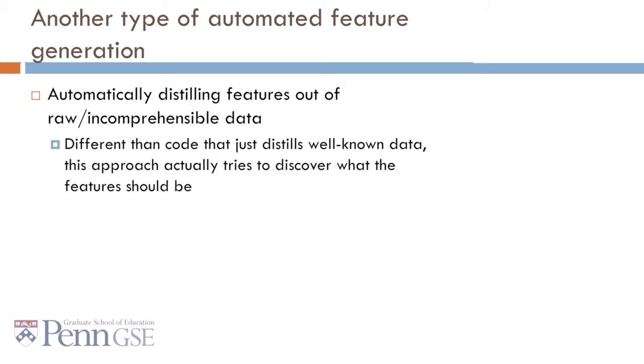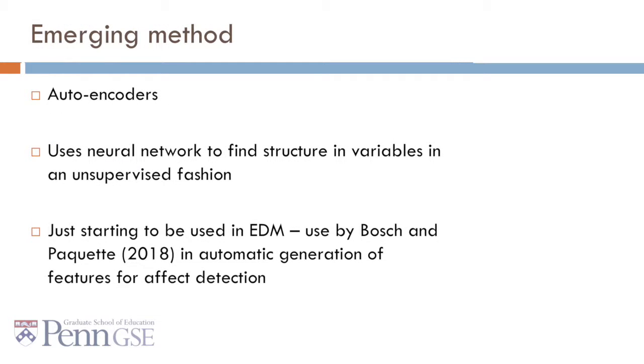Now it's worth mentioning that there's another type of automated feature generation which consists of automatically distilling features out of raw or incomprehensible data. This is different than code that just distills well-known data. This approach actually tries to discover what the feature should be in an automated or semi-automated fashion. One emerging method for this is autoencoders. Autoencoders use neural networks to find structures and variables in an unsupervised fashion. It's just getting started to be used in educational data mining. For example, it was used by Nigel Bosch and Luc Paquette in work to automatically generate features for affect detection, a domain where we don't entirely know what the right kind of feature should be, so it's a good kind of use for this method.